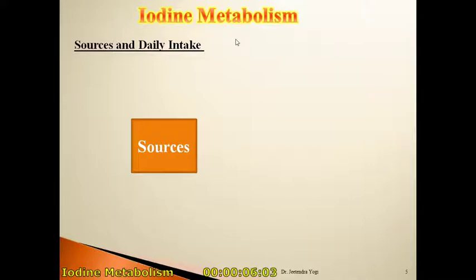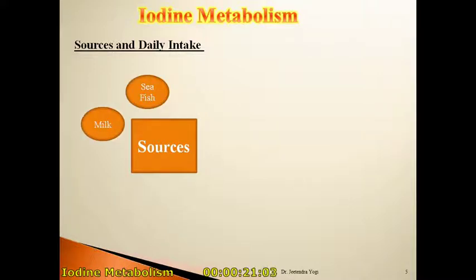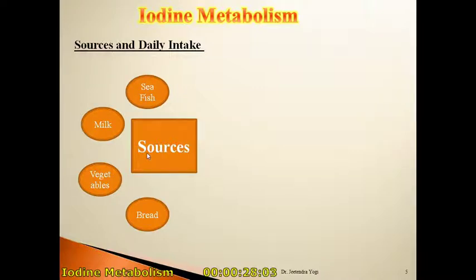Here we will see the iodine metabolism, as iodine is very important to synthesize the thyroid hormones T3 and T4. The sources of iodine intake in our body include sea fish, which is the richest source, along with milk, vegetables, and bread. These are the dietary sources by which we can get iodine into our body.